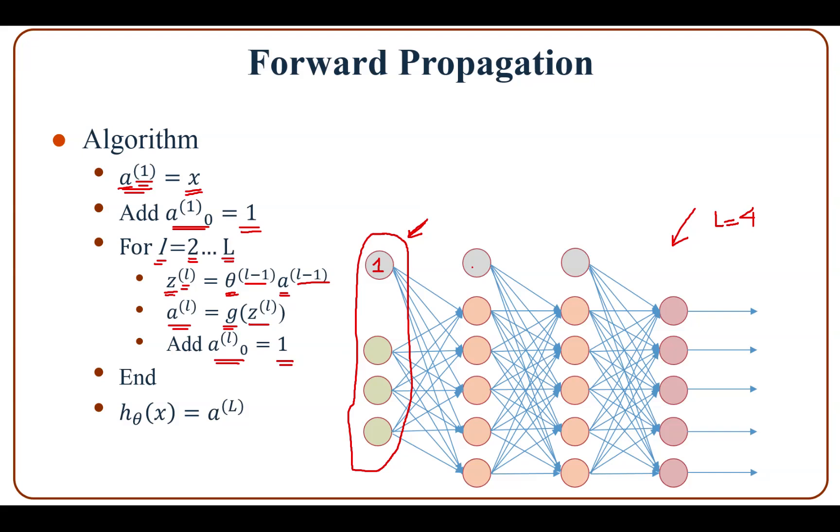So we add one there and one there. However, we don't add this value at layer 1, so notice this. And finally, the hypothesis is assigned to a_L, which is the output at layer L.